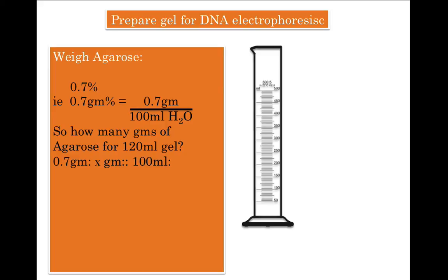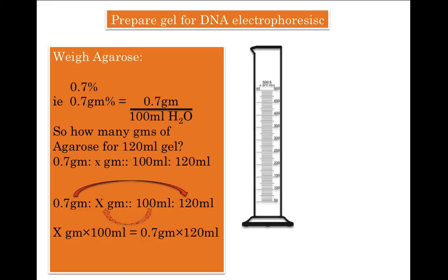So how many grams of agarose for 120 ml of buffer? Since it's a directly proportional relationship, the outer values and the inner values multiply together: x grams × 100 ml = 0.7 grams × 120 ml. Taking 100 to the denominator on the right side, x grams = 0.7 × 120 ÷ 100, which gives us 0.84 grams.